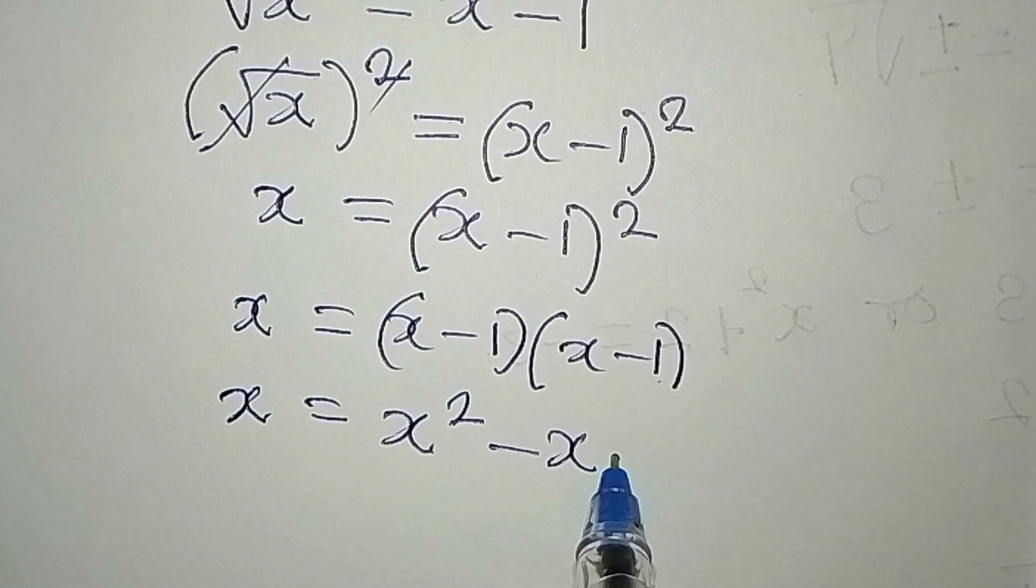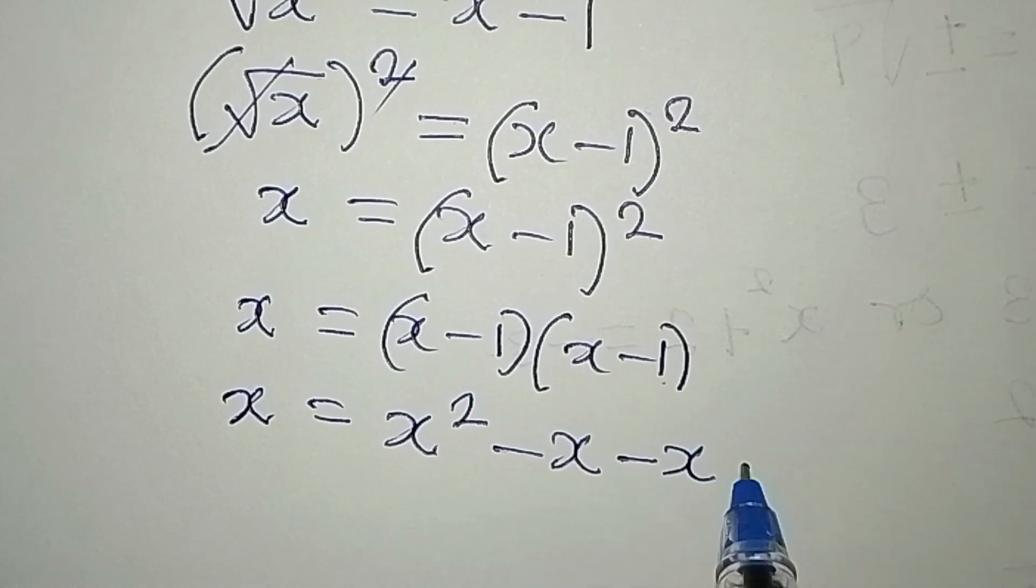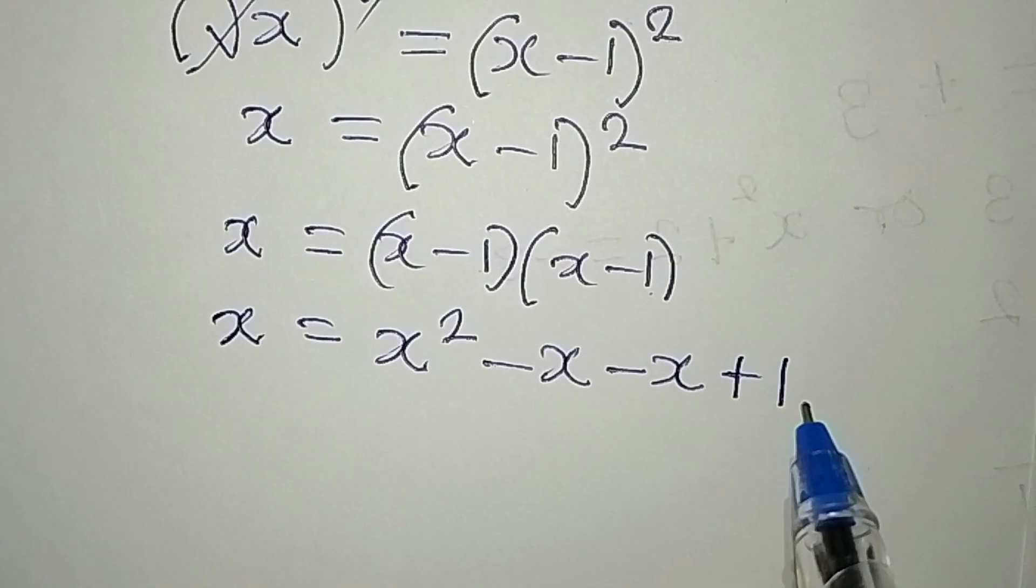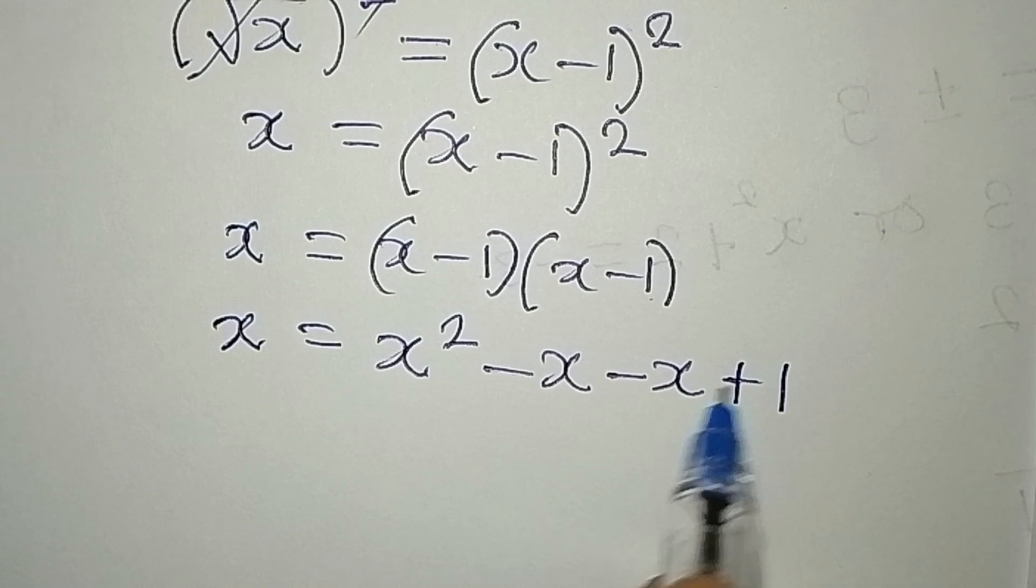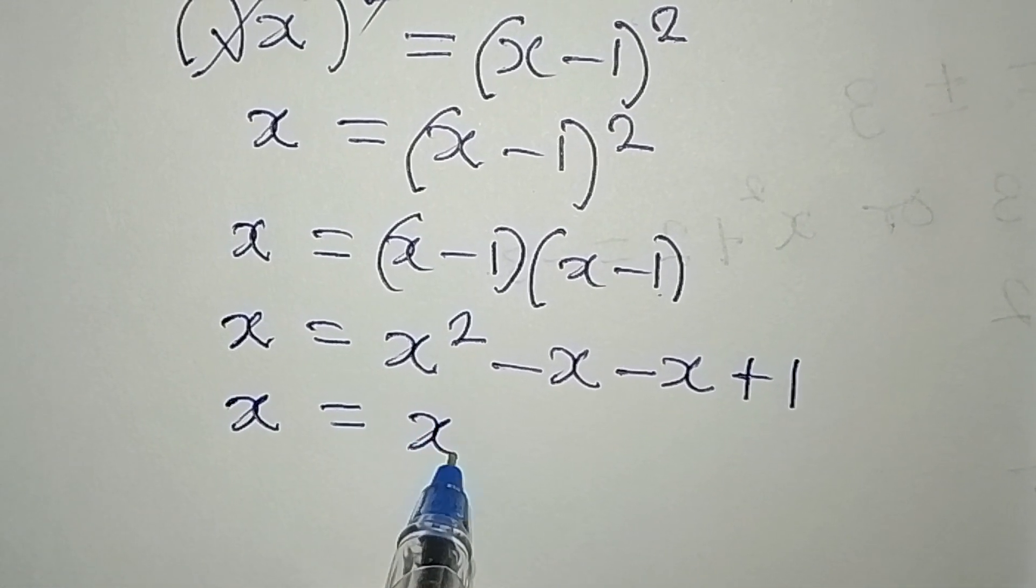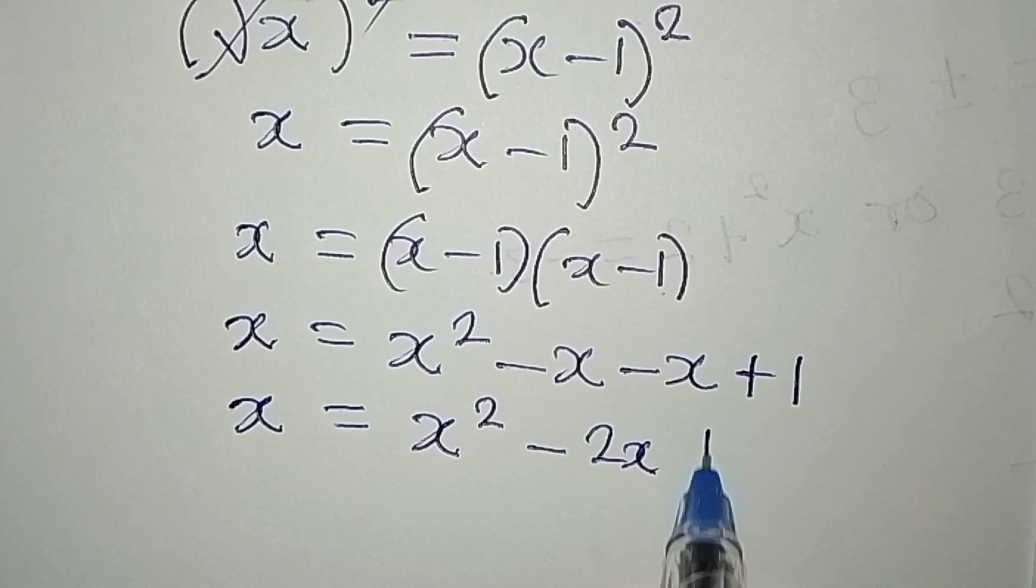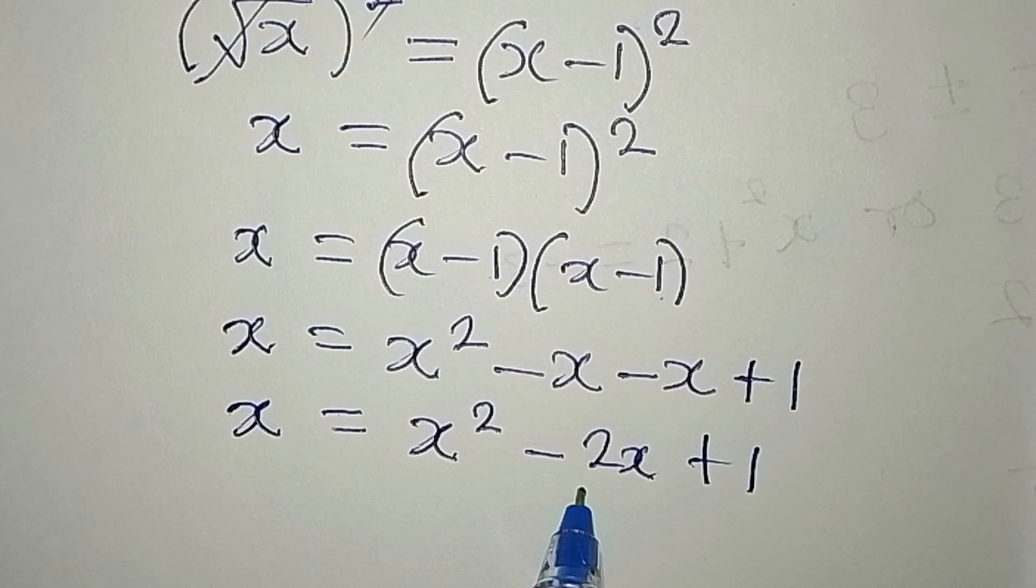And this multiplied by this will give us positive 1. Because negative times negative will give positive. So we have x to be equal to x squared minus 2x plus 1.